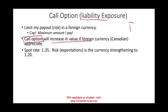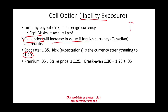Let's look at numbers. The spot rate is 1 USD = 1.35 CAD. Your risk: the Canadian dollar may strengthen and you may have to pay at a rate of 1 USD = 1.20 CAD. To avoid that, you buy a call option paying a premium of 0.05 per CAD, which is 1,000,000 × 0.05 = 50,000 CAD in fees. The call option comes with a strike price of 1 USD = 1.30 CAD — that's the rate at which you can do the exchange.